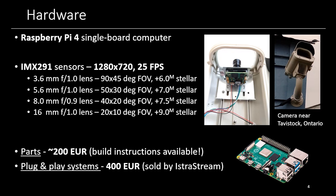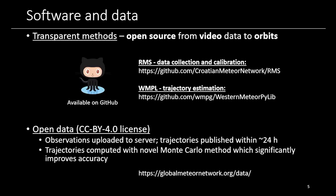Everything in parts, if you want to build it yourself, is about 200 euros, and we have build instructions available. If you want a plug-and-play system, we have a private industry partner who will sell you a tested and assembled system for about 400 euros. As for the software, it is completely transparent and open source. The RMS — Raspberry Pi Meteor Station — software is available on GitHub and does data collection and calibration. Data from stations gets uploaded to a server where our trajectory estimation software runs, and within about 24 hours all trajectories are published on our website using a tested method.